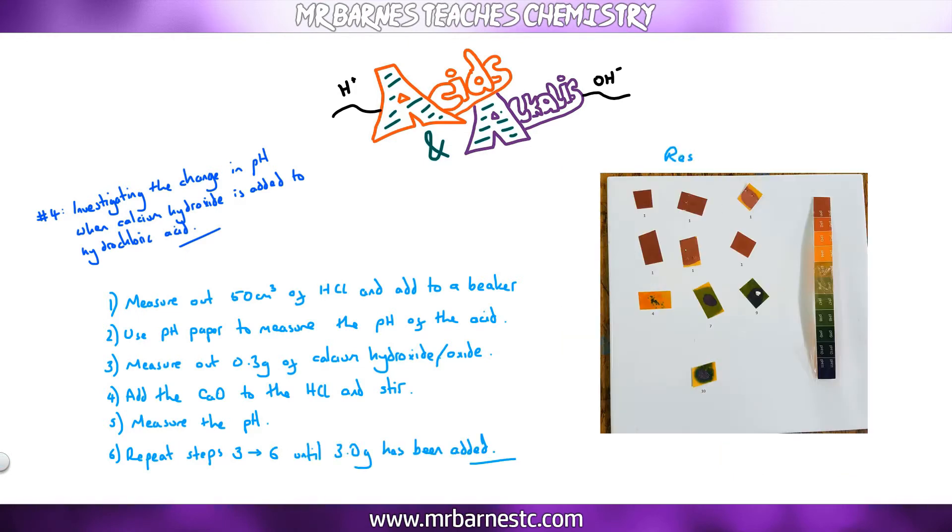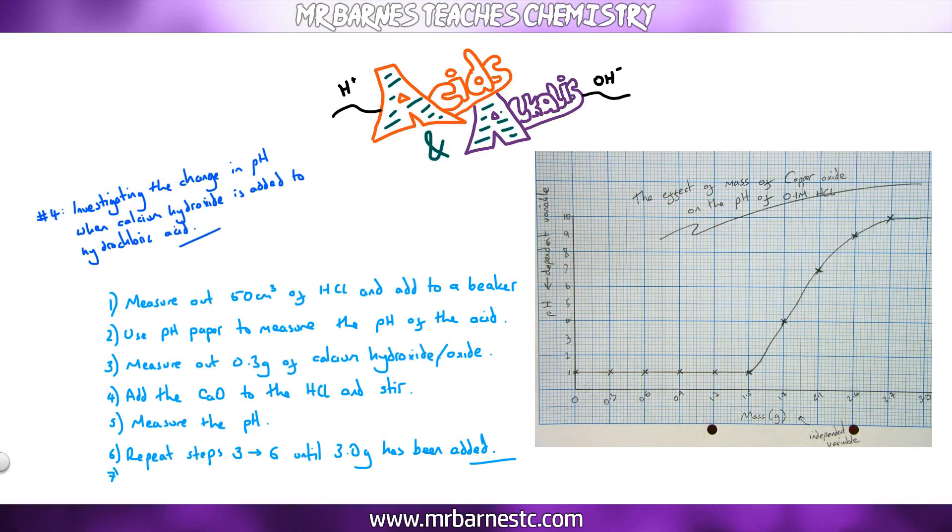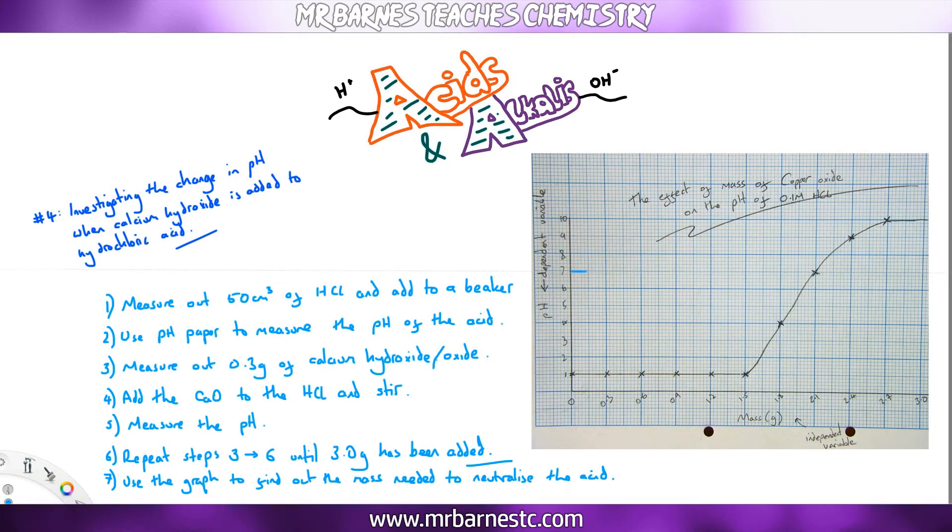You'll get some results that look like this and you'll get a graph that looks like this. You can then use that graph to find out the exact mass that it became neutral. So you read across from pH 7, which is on neutral pH, and you go straight down. As you can see here from my graph, 2.1 grams is where it became neutral.